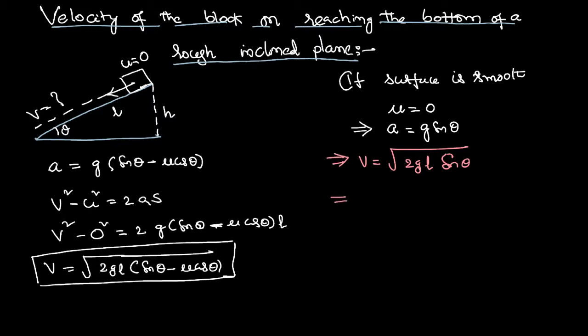Suppose you want to express it in terms of the height of the inclined plane. We can write from the diagram that sin theta - look at the diagram, this is a right angle triangle. Sin theta is opposite side by hypotenuse as per the basic definition. So we can write sin theta equals h by L.